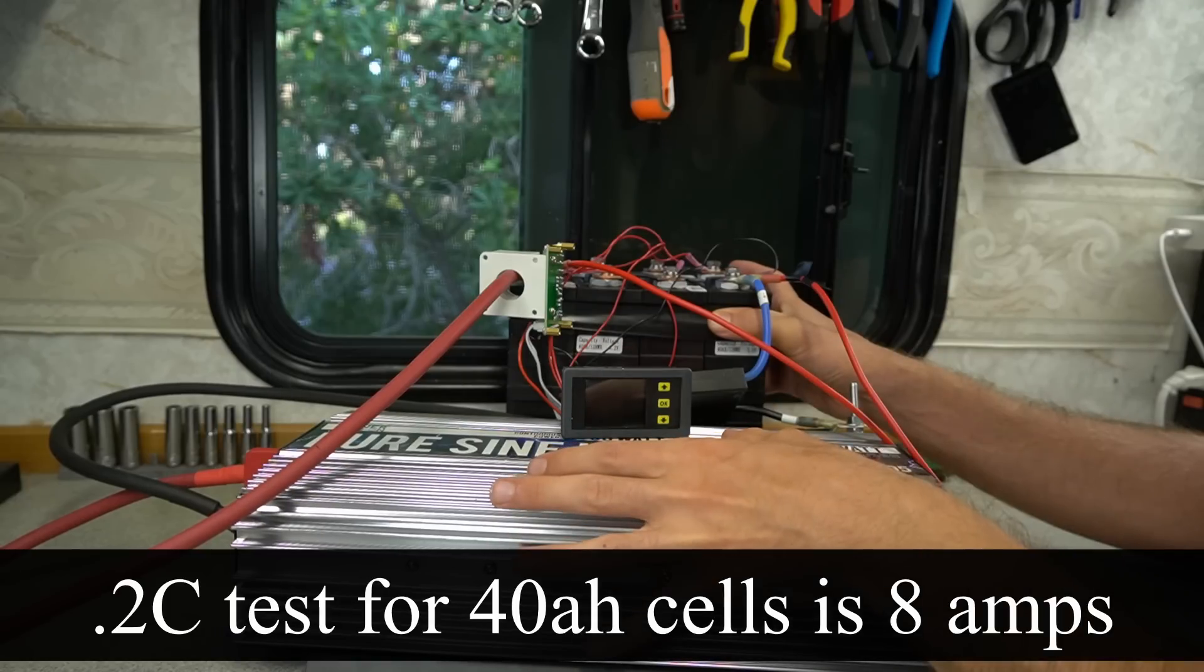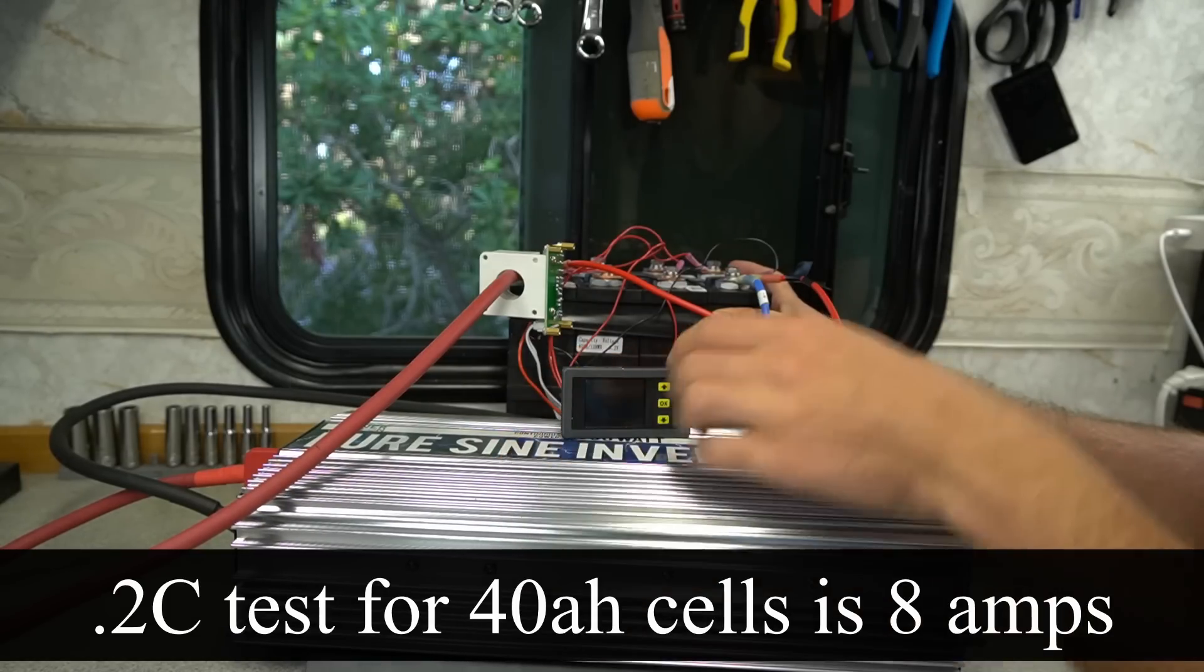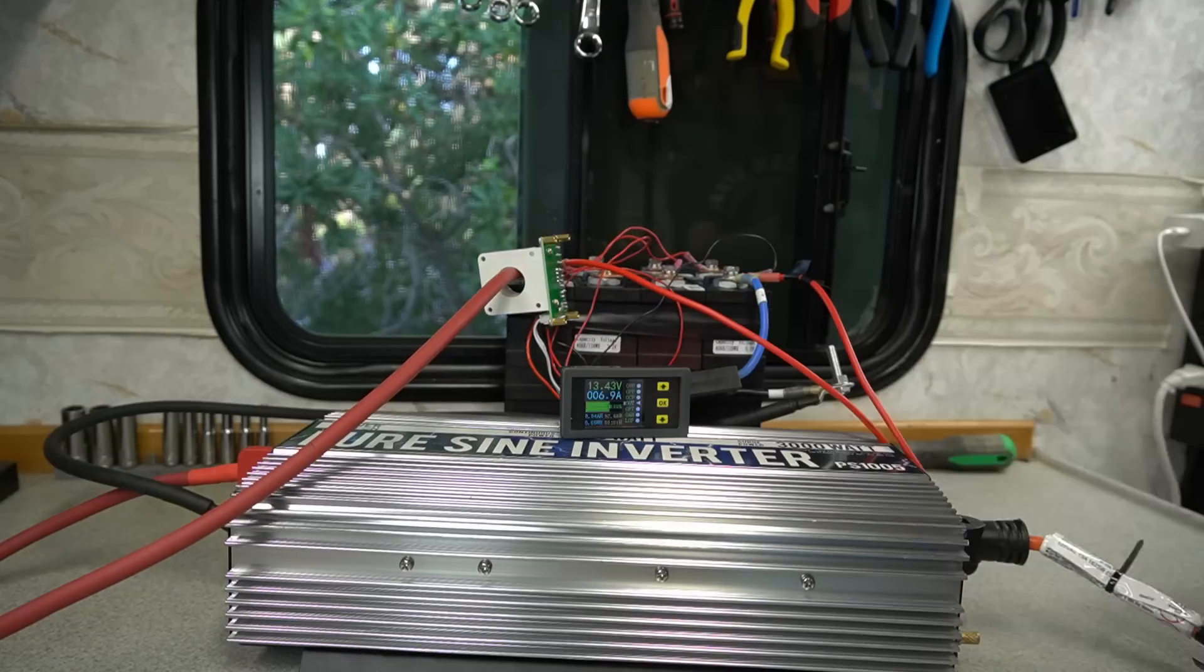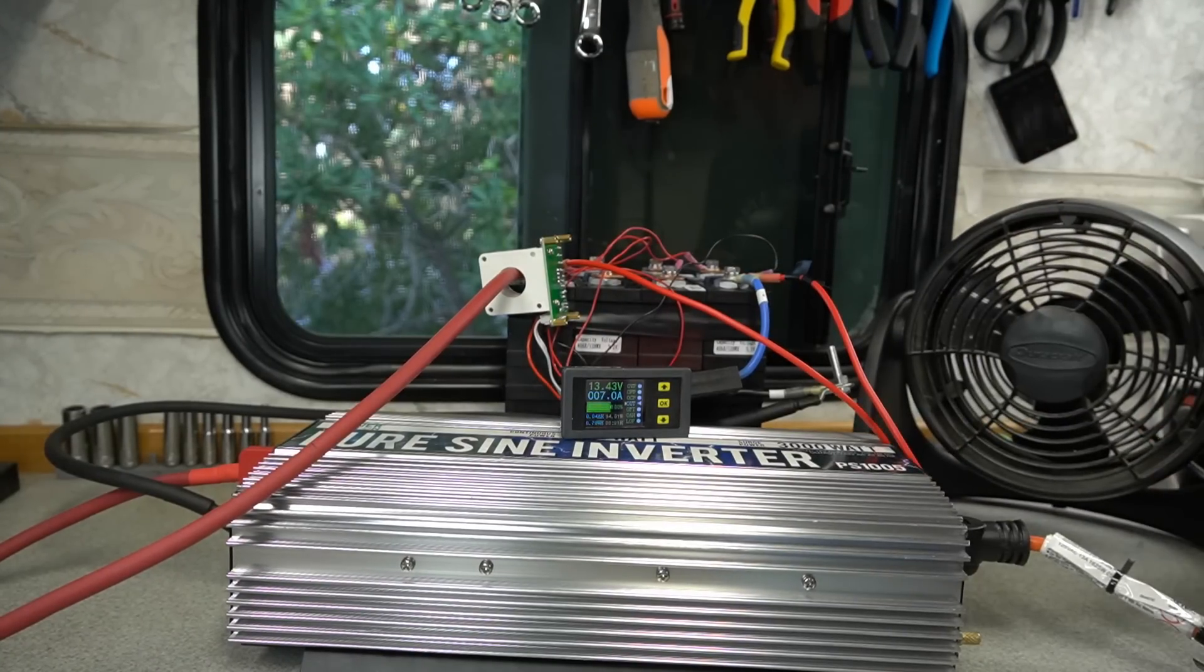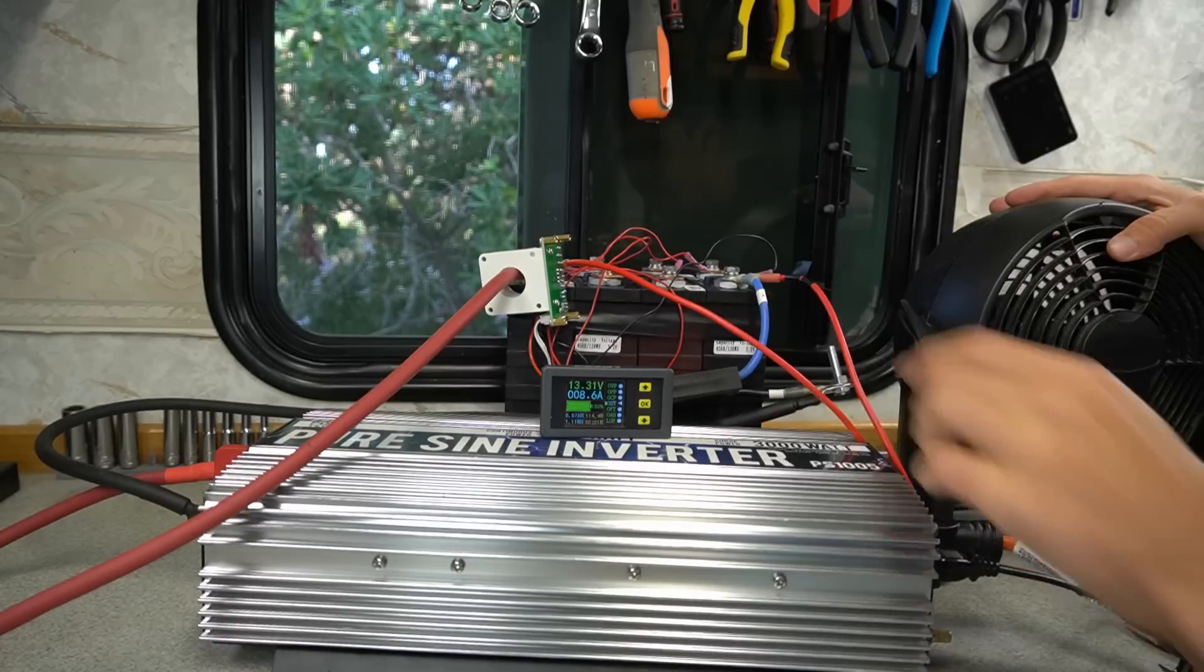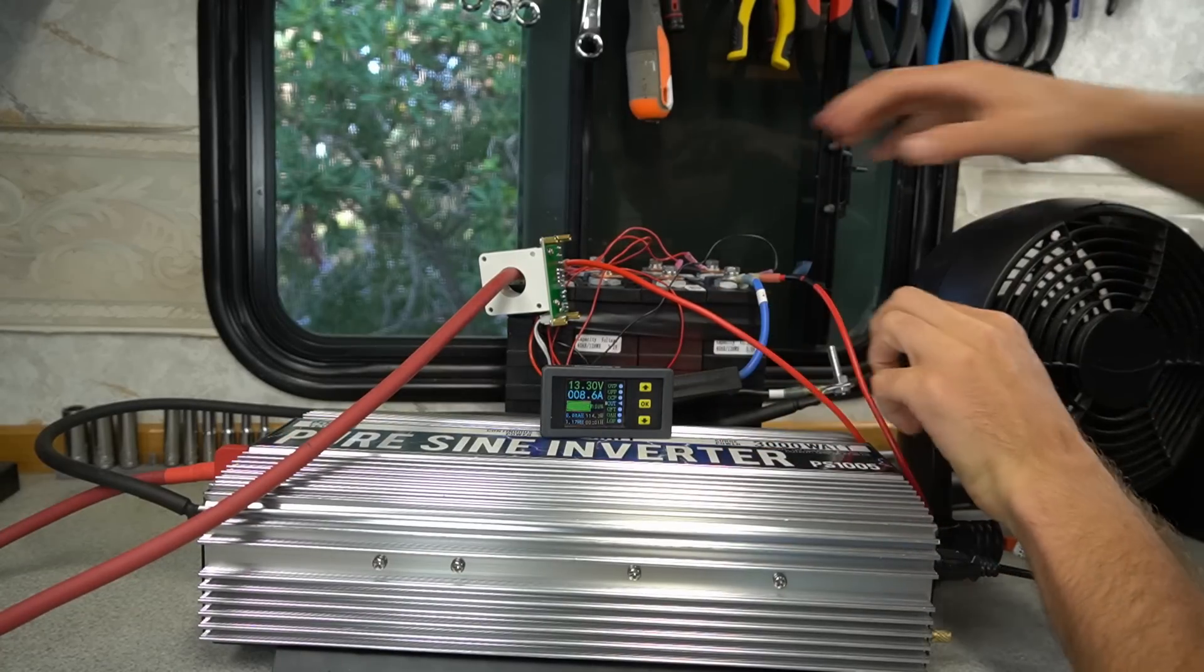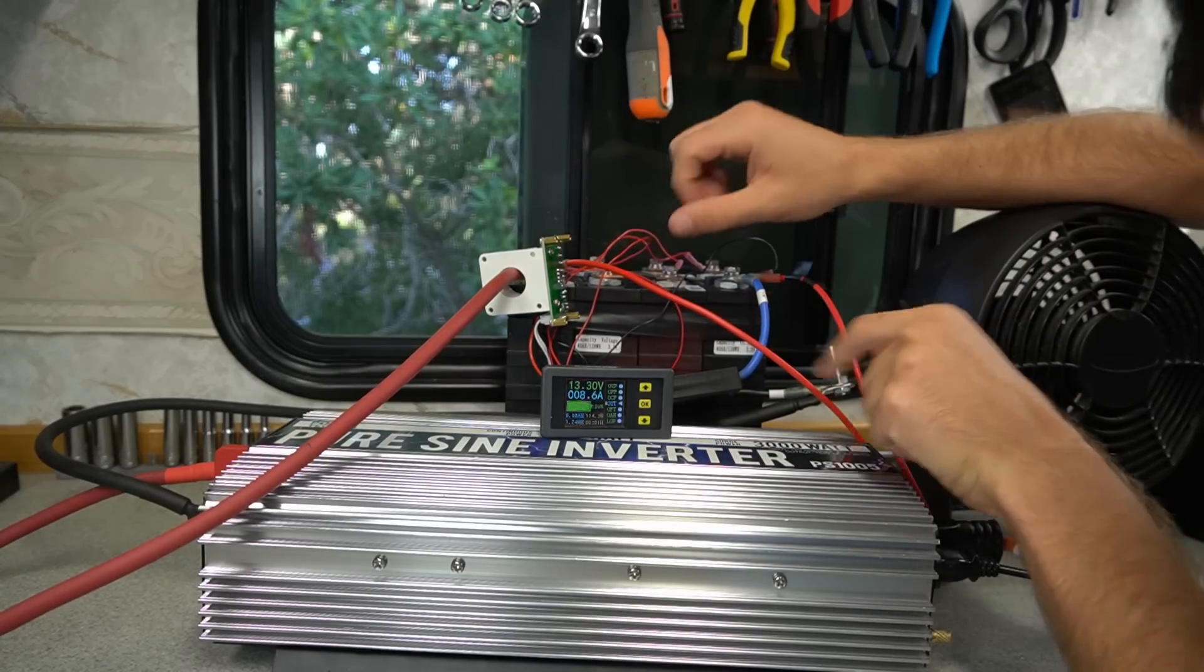So I'm going to add random appliances until I hit exactly eight amps at 12 volts. So we're at seven amps which is super close. But let's try to make it to eight. 8.6, that's really good. These batteries can handle a lot. So yeah this is a good test.